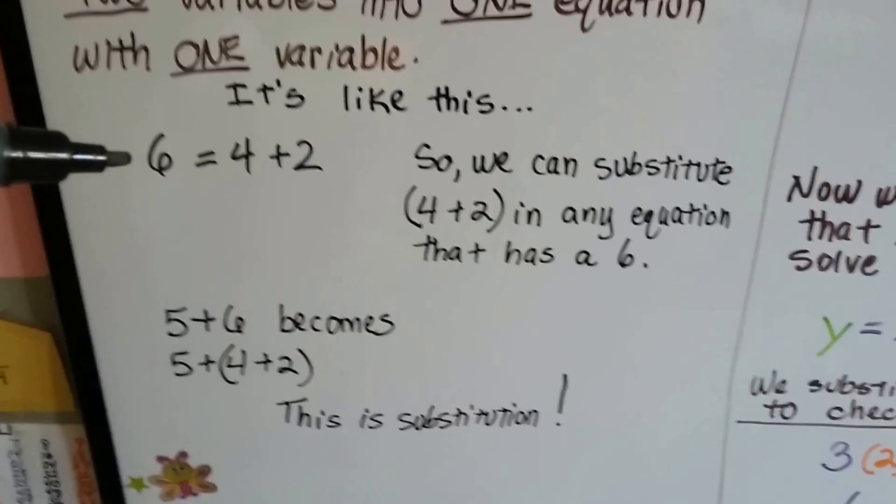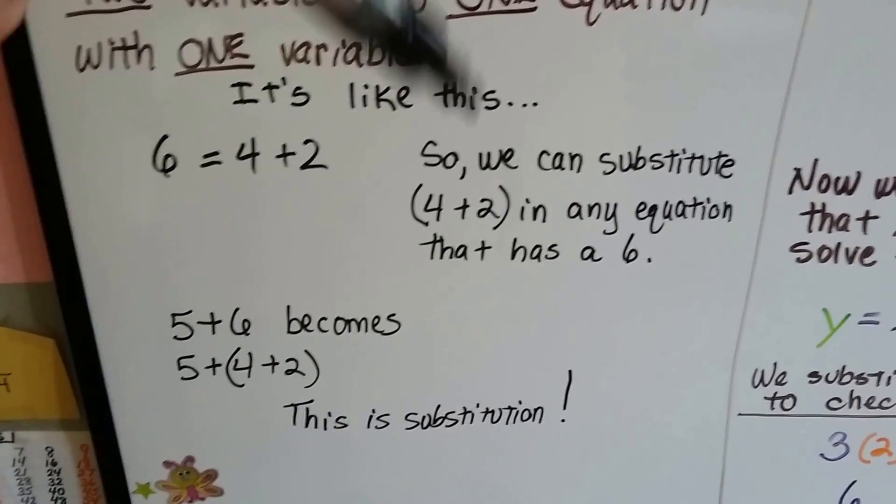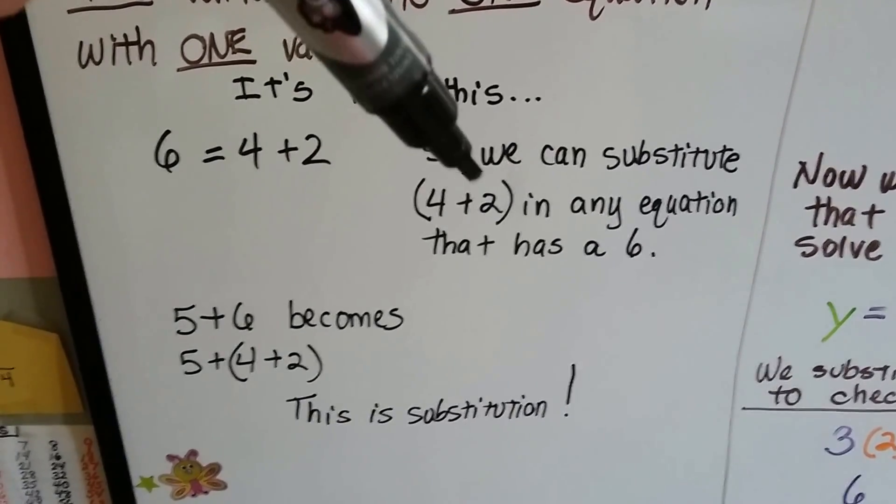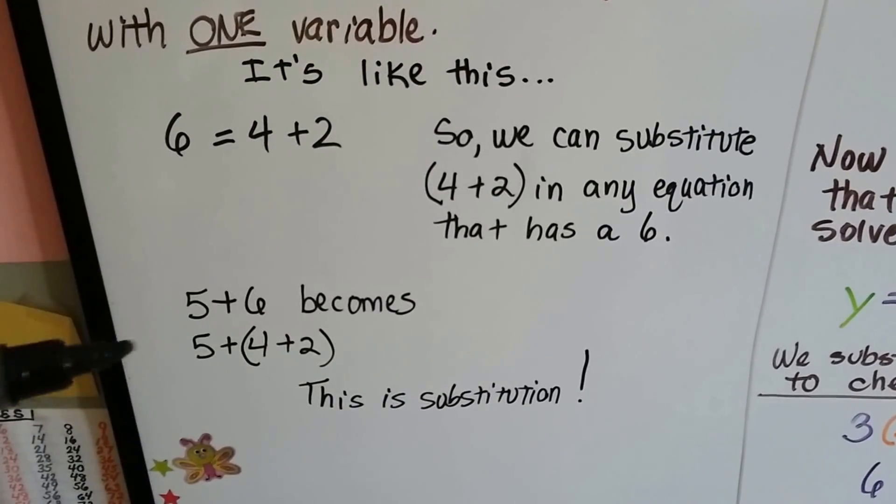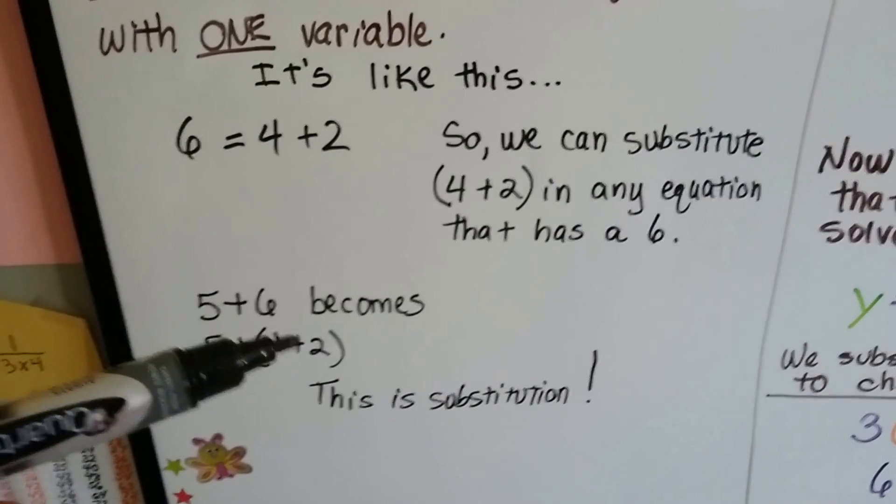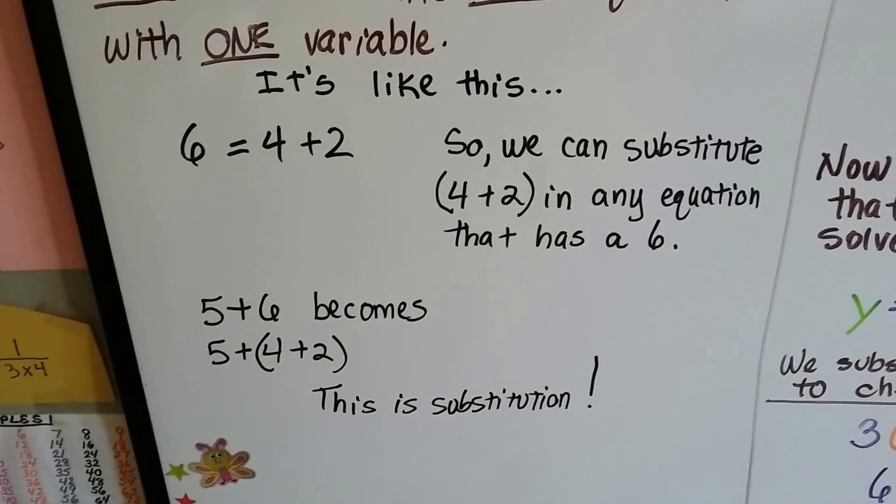Think of it like this. If 6 equals 4 plus 2, we can substitute that 4 plus 2 in any equation that has a 6 in it. 5 plus 6 becomes 5 plus 4 plus 2. That's substitution. We substituted the 4 plus 2 in the place of the 6.